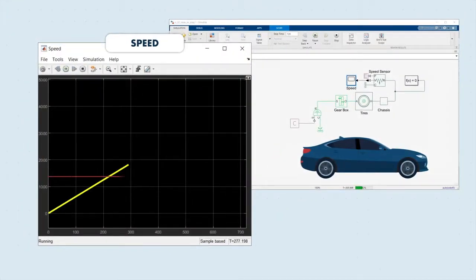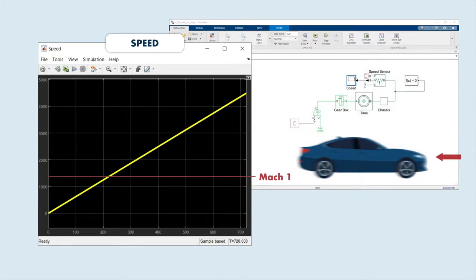The car just keeps going faster and faster. Yeah, I'm pretty sure my speedometer doesn't go that high. We're missing some physical effects. We need to add rolling resistance of the tires, aerodynamic drag, and the road incline.